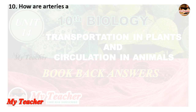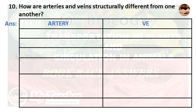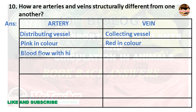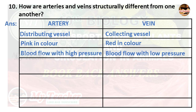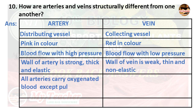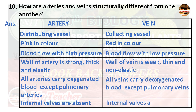Tenth question: How are arteries and veins structurally different from one another? Artery vs Vein: Arteries are distributing vessels, pink in colour, carry blood with high pressure, have strong, thick and elastic walls, carry oxygenated blood (except pulmonary arteries), and have no internal valves. Veins are collecting vessels, red in colour, carry blood with low pressure, have weak, thin and non-elastic walls, carry deoxygenated blood (except pulmonary veins), and have internal valves.